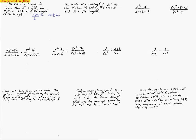We're going to substitute an expression in for the one they give us. It says the base of a triangle is — 'is' means equals — so we write B equals, and then three less than its height, meaning we take away three from the height. The area is 14. So substituting, we write 14 equals one-half times (h minus 3) times h.